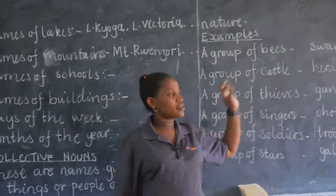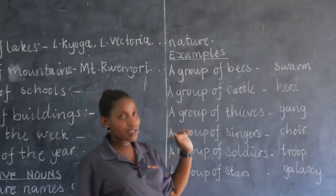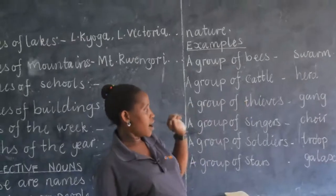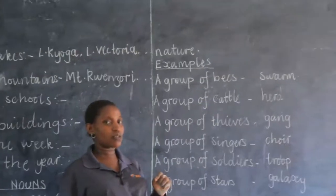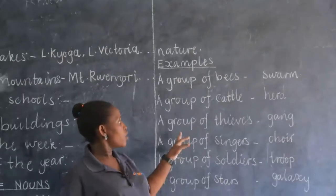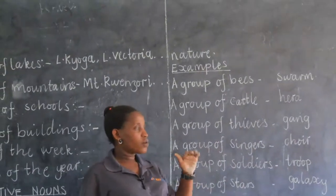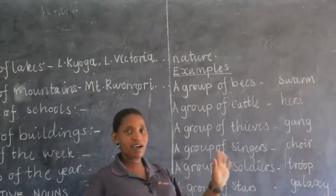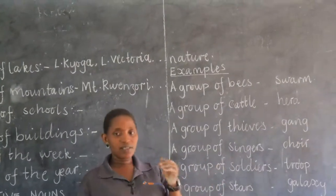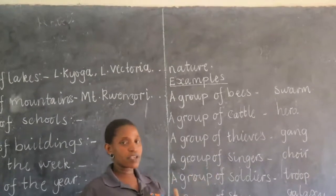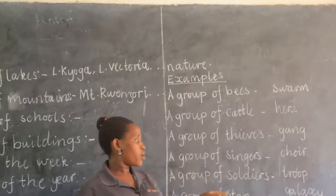For example, a group of bees — when bees are in a group, we call it a swarm. A group of cattle — we say a herd. A group of thieves, when those thieves are in a group, we call it a gang. A group of singers — when we collect singers together and they start singing for us with good melodies — that is a choir. A group of soldiers walking together — we call that a troop. A group of stars in the sky — we call it a galaxy.